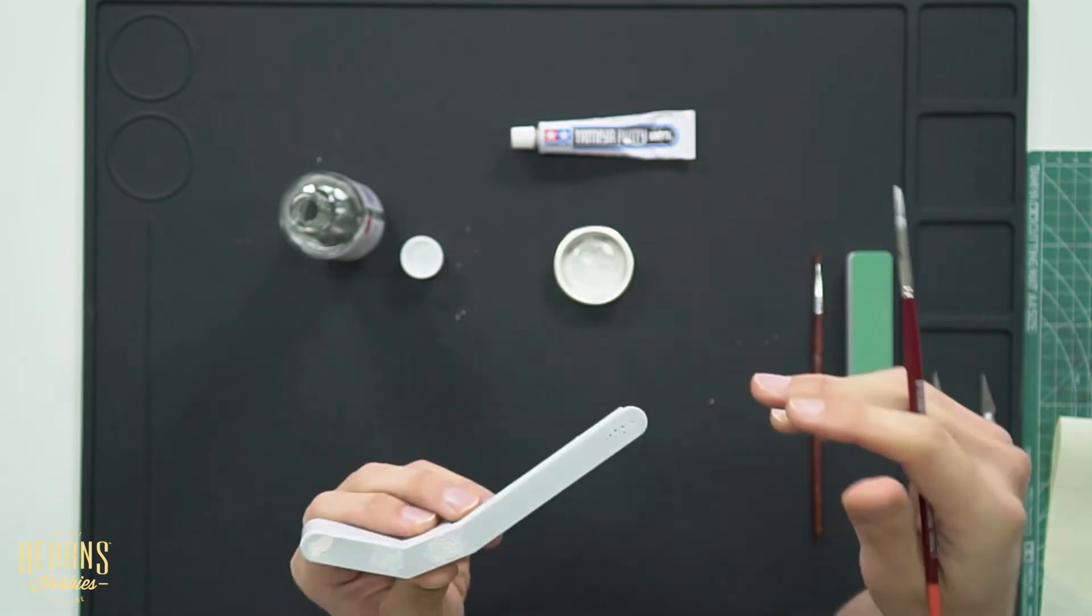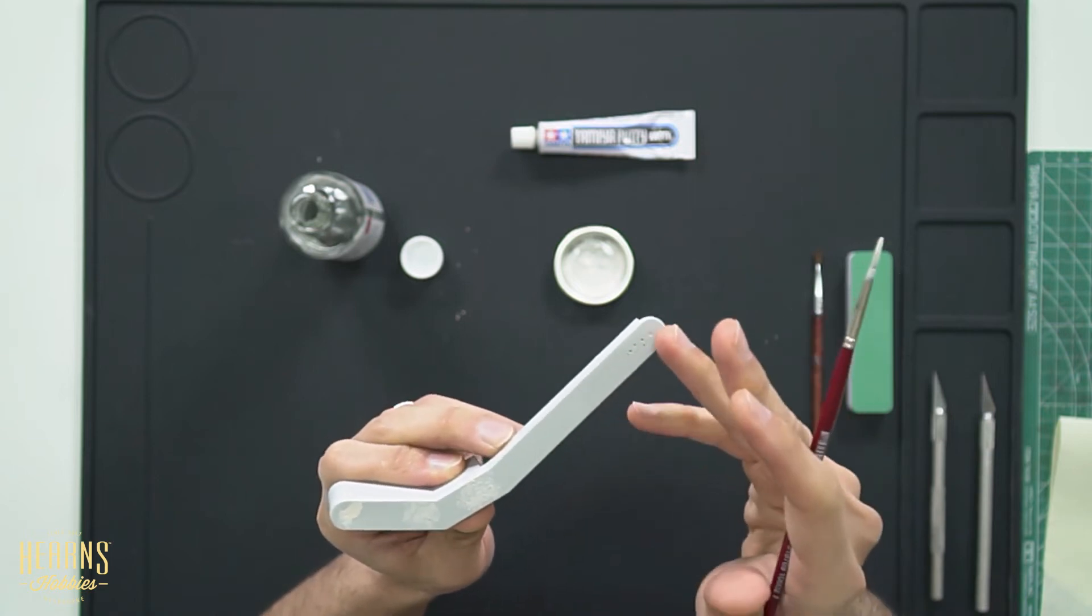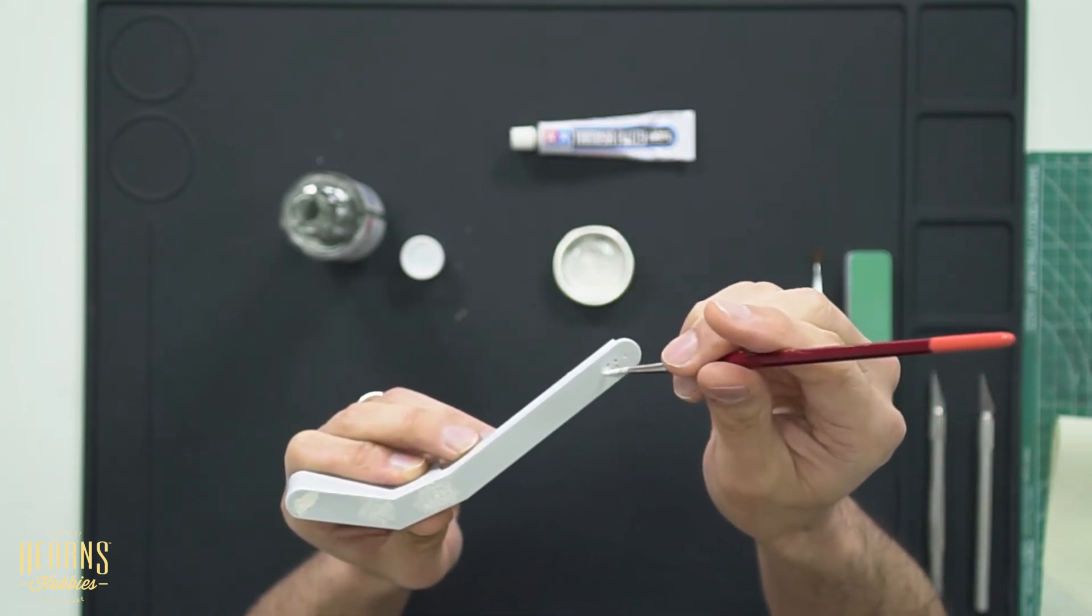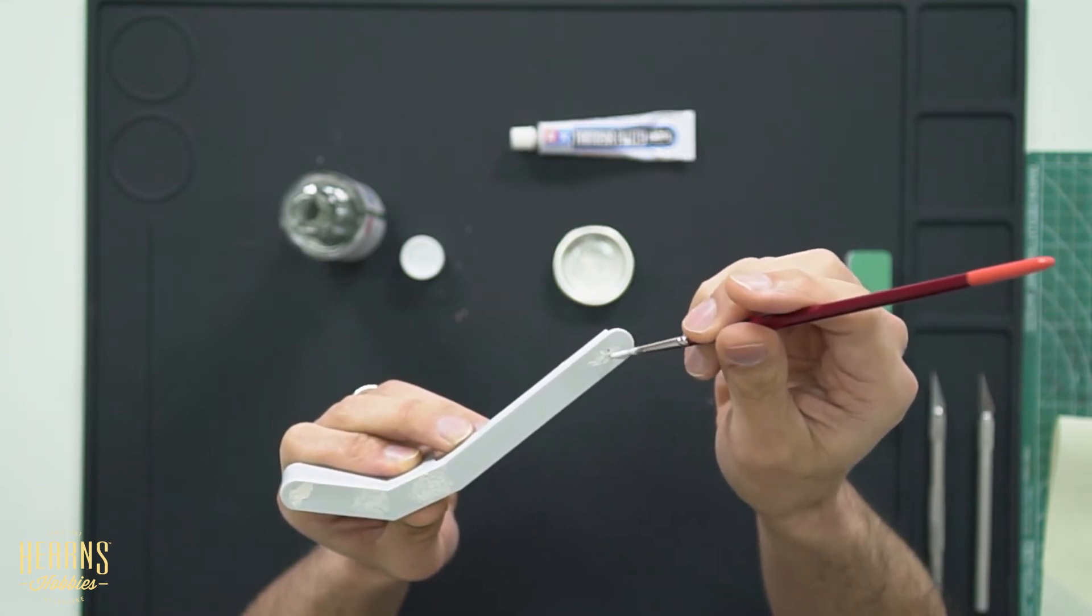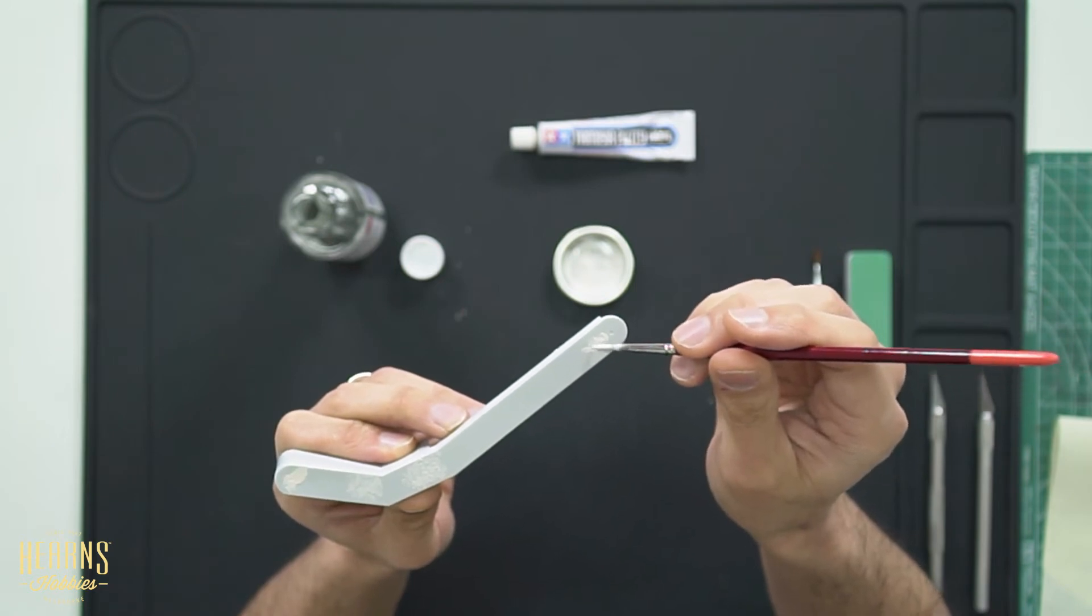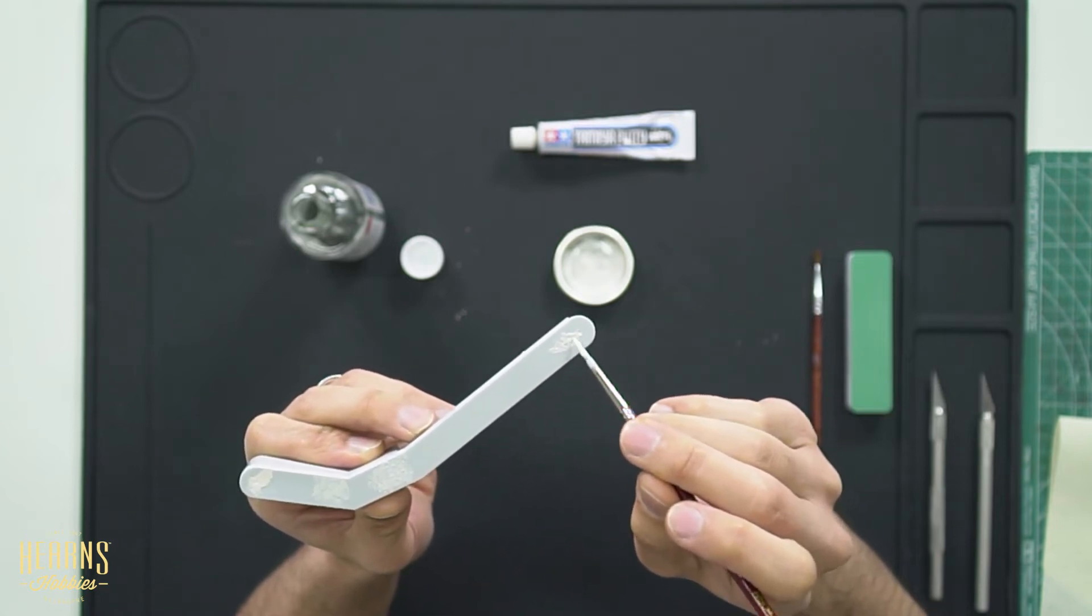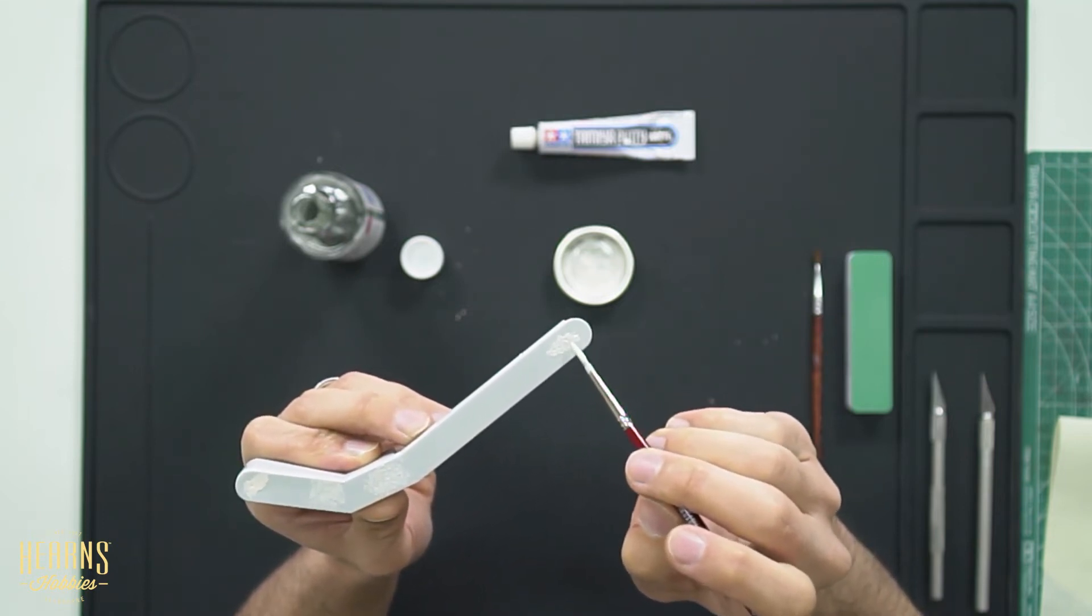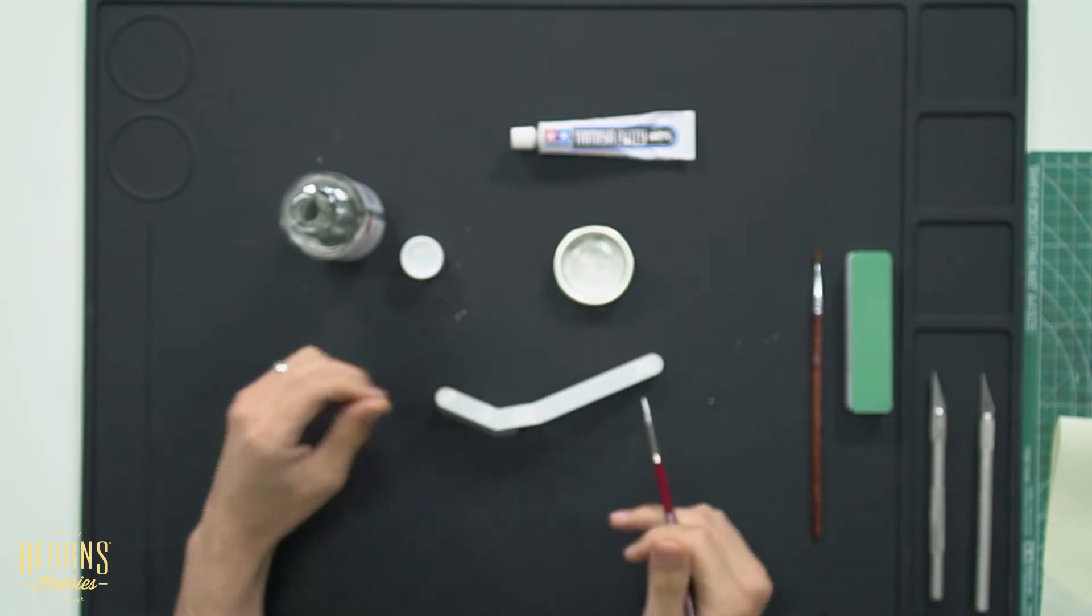And then over here the other thing you can do with a thinned out putty is you can use it for filling in smaller holes like this. Because usually when it's really thick it's very hard to get them to actually seep into these holes. But since it's very thin now we'll just drop it in there. And it'll fill those holes much easier. Now when it's thin you may have to do a couple of applications. But at least you get it to enter into those holes. So we've got four examples happening here.